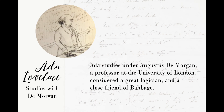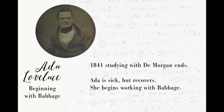Babbage recommended Augustus DeMorgan, a professor at the University of London and considered one of the great logicians of his time, and a close friend of Babbage. It's not clear exactly when Ada quit studying with DeMorgan, but in 1841 the correspondence with him ends. Ada also got sick in 1841 — she had been battling illnesses throughout her life — but she did go on to continue working with Babbage.